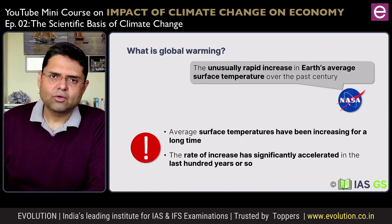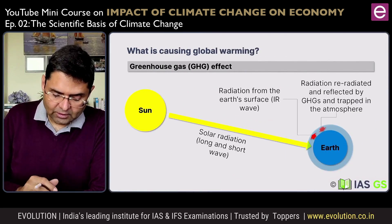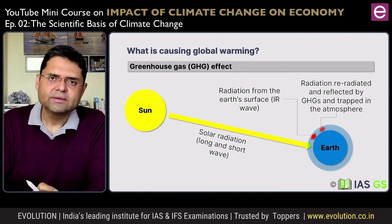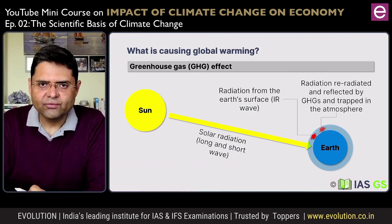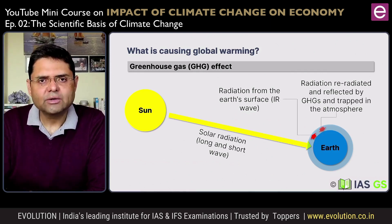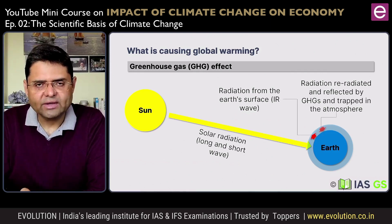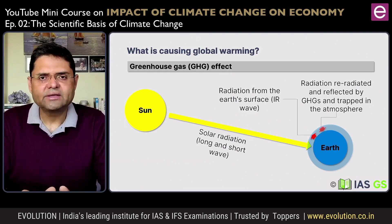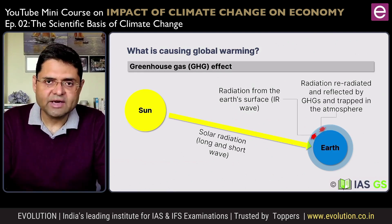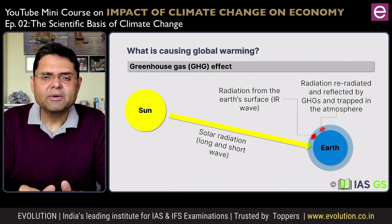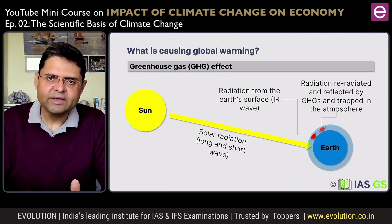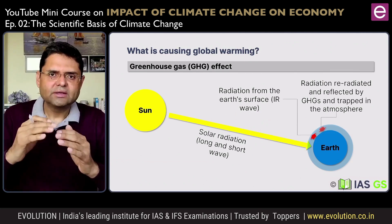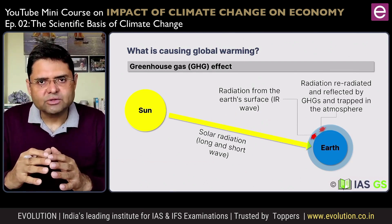Now let us come to what causes global warming. Global warming is caused by an underlying phenomenon called the greenhouse effect or the greenhouse gas effect. Basically, the greenhouse effect is a heat entrapment mechanism — meaning some amount of heat will be trapped — that operates in the lower part of the atmosphere.